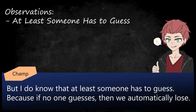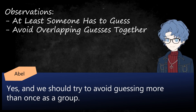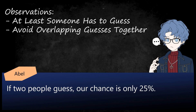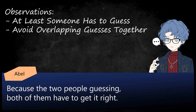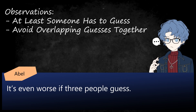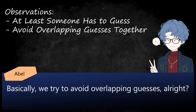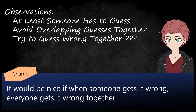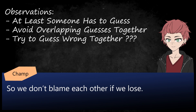"I do know that at least someone has to guess, because if no one guesses, then we automatically lose." "Yes, and we should try to avoid guessing more than once as a group. If two people guess, our chance is only 25%, because both of them have to get it right. It's even worse if three people guess. Basically, we try to avoid overlapping guesses. It would be nice if when someone gets it wrong, everyone gets it wrong together, so we don't blame each other if we lose."